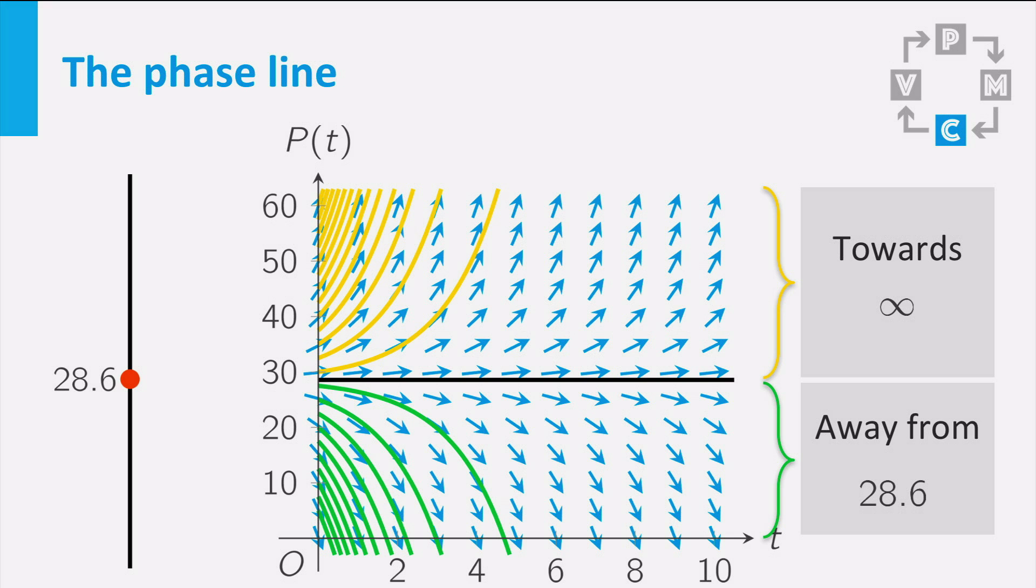If you would have an initial value smaller than 28.6, we concluded previously that the value would decrease. You can indicate this in this graph by drawing an arrowhead on the line pointing away from 28.6. In a similar fashion, you can draw an arrowhead above the equilibrium which points upwards, because any initial value larger than 28.6 will give a solution curve that tends to infinity.